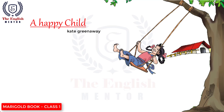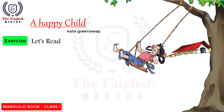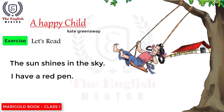Let's go through the exercise. New words: cry, day, red, sun. Let's read. The sun shines in the sky. I have a red pen.